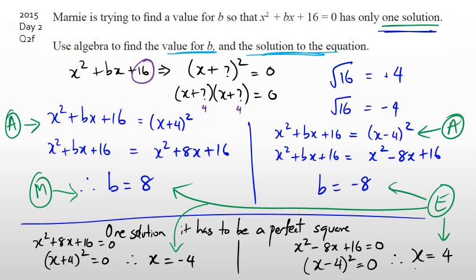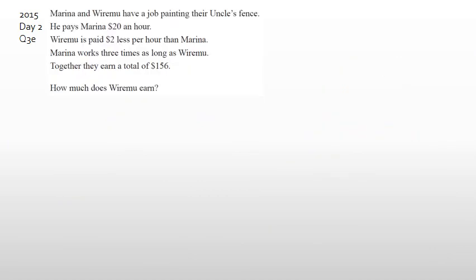You have to find both values of B, not just one, because there are actually two solutions. This comes back to understanding that when you take the square root of a number, you get plus or minus as the two answers. Okay, let's go to the next one.